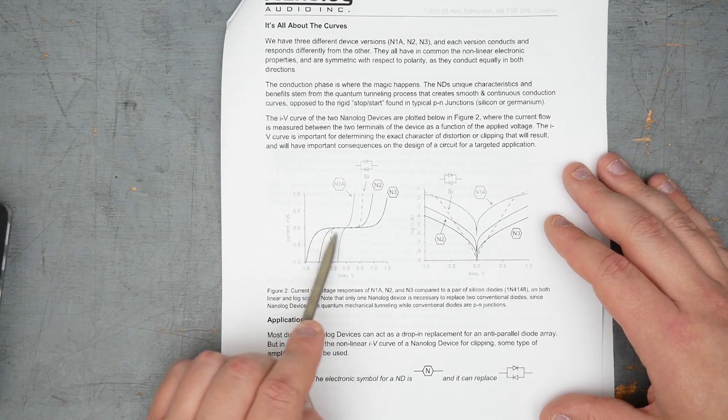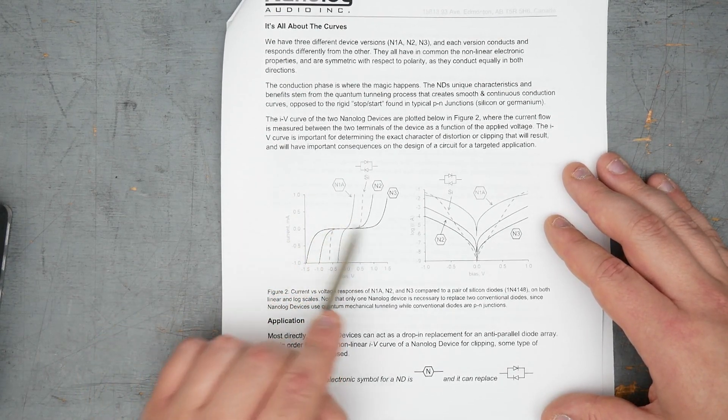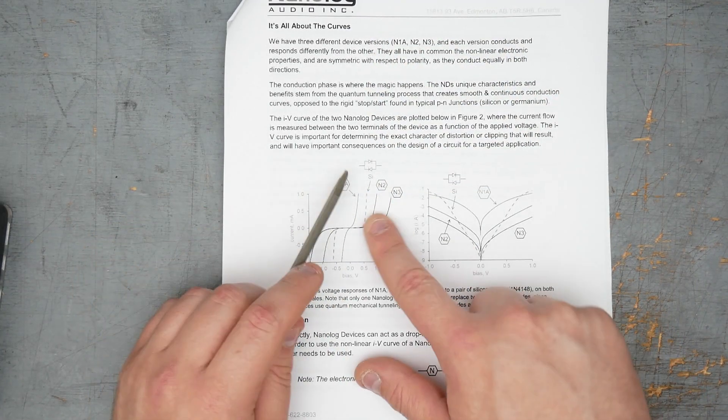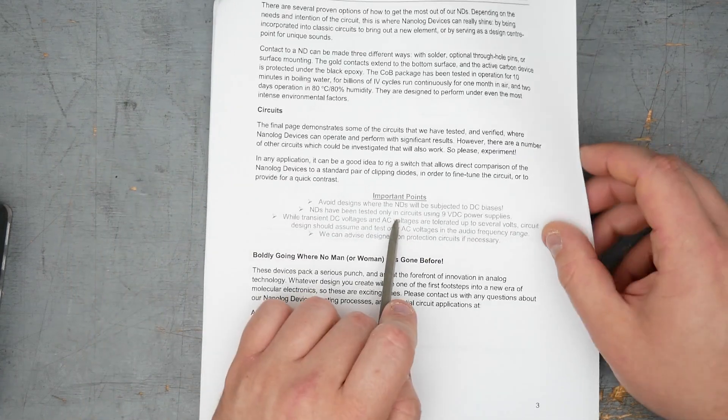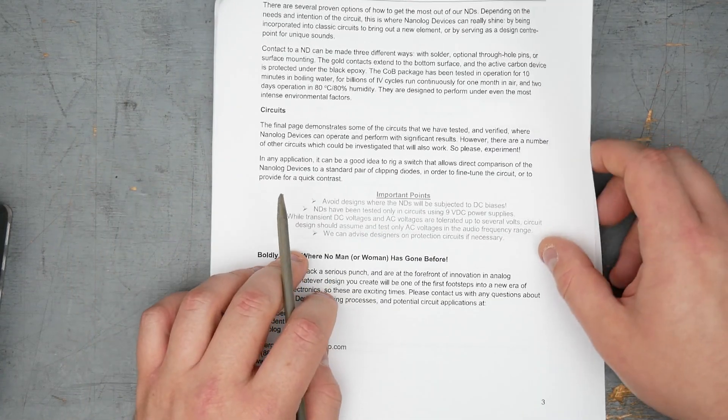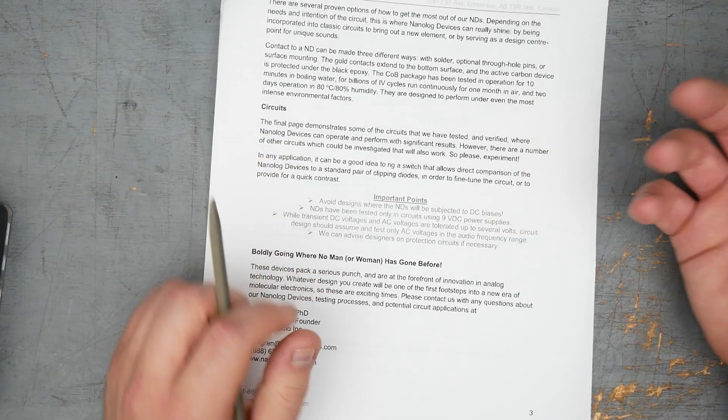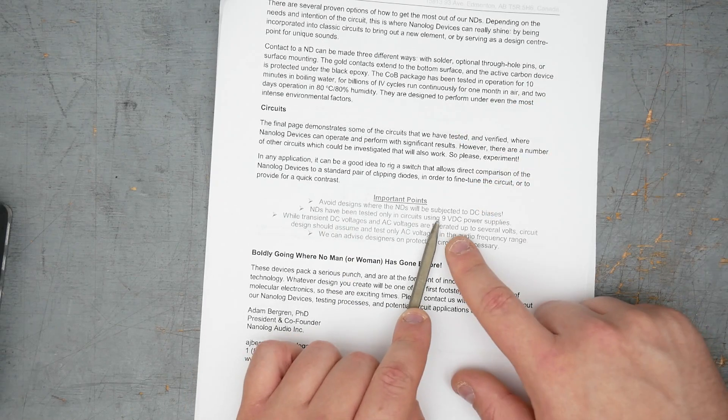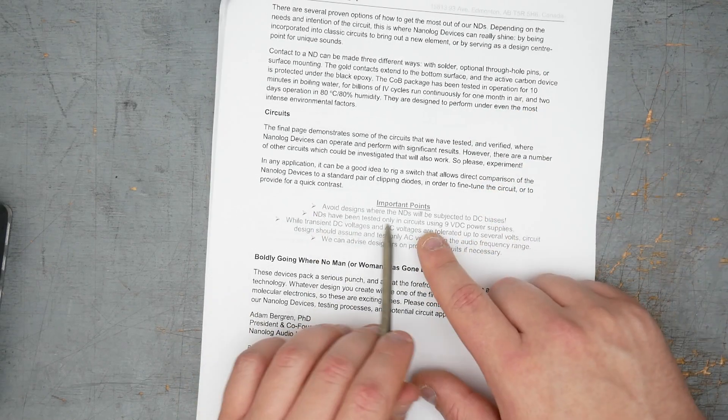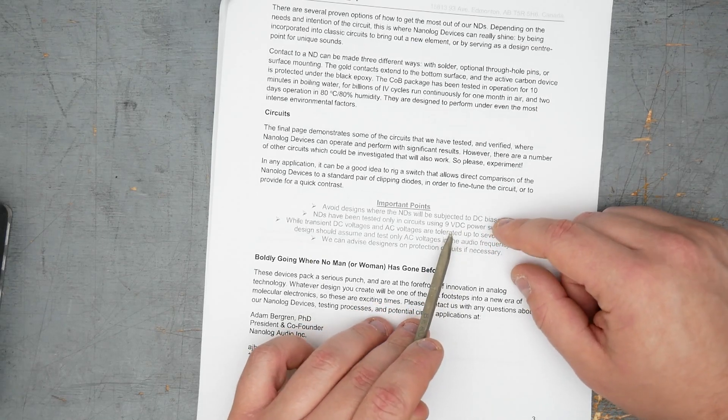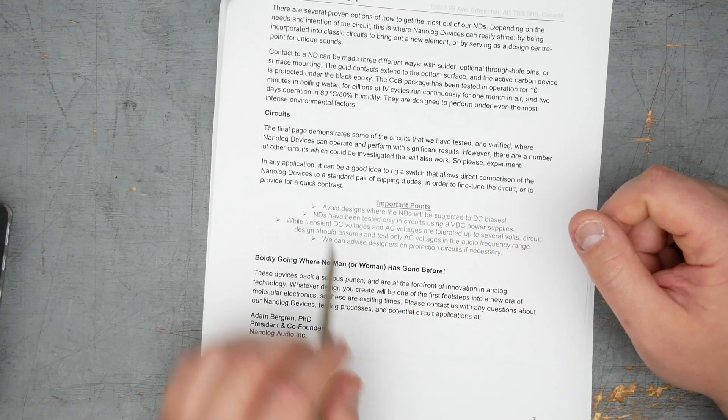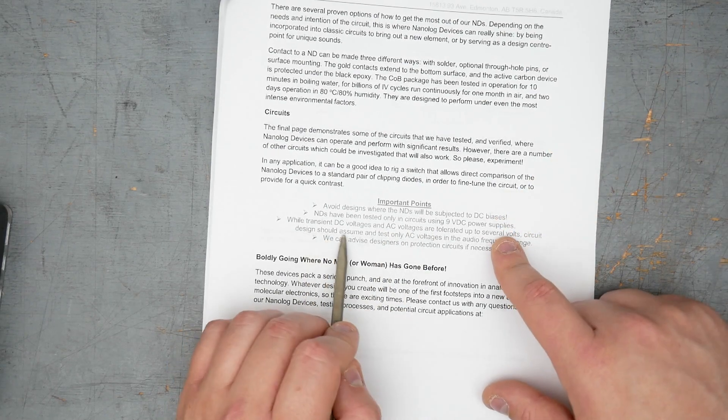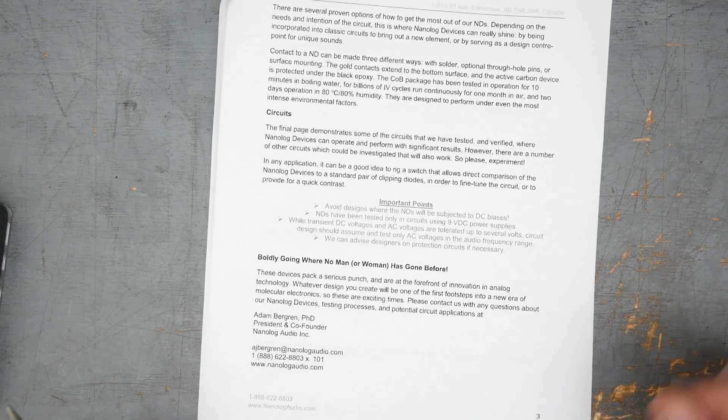Here they're showing forward voltage curves, the N1 being shorter or a lower forward voltage than like a standard silicon clipping diode, and N2 and N3 are much higher. There are some restraints when using these - apparently you're not supposed to subject the nanolog device to any DC current, excuse me, DC bias, like DC voltage. They've only been tested in circuits using 9 volt DC power input, so not necessarily higher or lower.